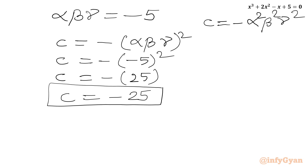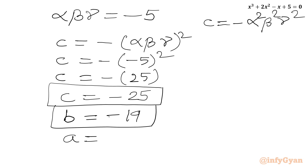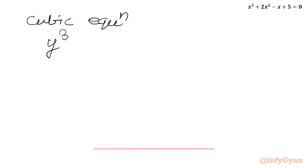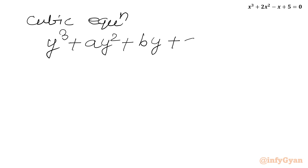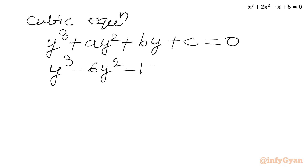Now all three unknowns are known: a = -6, b = -19, c = -25. We will write our cubic equation: y³ + ay² + by + c = 0, which gives us y³ - 6y² - 19y - 25 = 0. This is our final answer.